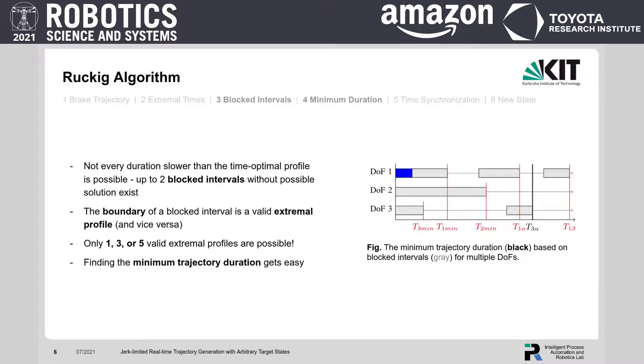Then, finding the minimum duration of the complete trajectory gets easy by finding the first point of time that is not blocked by any degree of freedom.